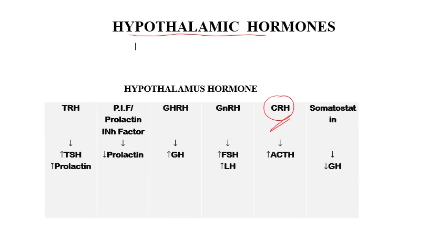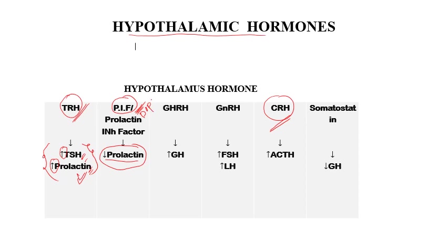First in this category is thyrotropin-releasing hormone, TRH. It will increase TSH and also increase prolactin, so remember the friendship between TSH and prolactin — that will help us understand various clinical phenomena later. Prolactin inhibitory factor — which is dopamine — will decrease prolactin. So if you give anti-dopaminergic drugs, this inhibition will be removed and prolactin will increase. These drugs are mostly given to mothers who want to breastfeed but have problems with milk production.